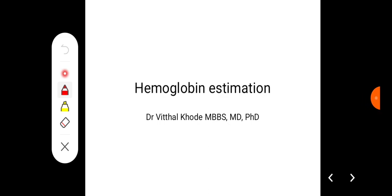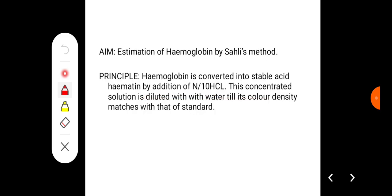Hello everyone, in this class we'll learn how to estimate hemoglobin. The aim of this experiment is to estimate hemoglobin by Sahli's method. The principle of this Sahli's method is hemoglobin is converted into stable acid hematin by addition of N/10 HCl.